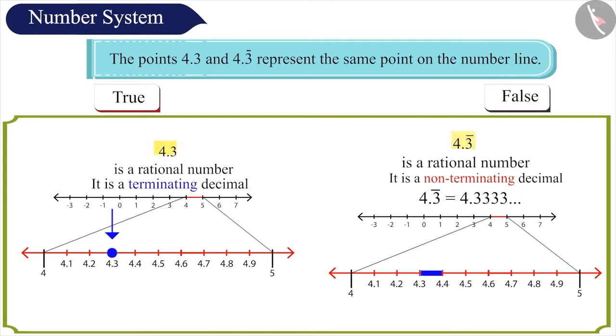That means the numbers represent two different points on the number line. Hence, the given statement is wrong.